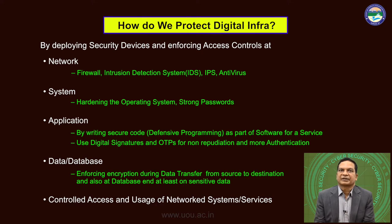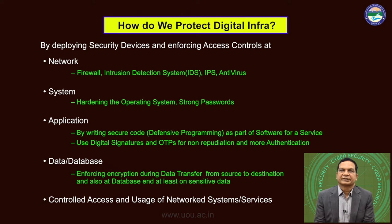At the system domain, hardening the operating system, enforcing strong passwords, and protecting ports are required. At the application level, by writing secure code — called defensive programming — as part of software or services, use digital signatures and OTPs (one-time passwords) for non-repudiation and stronger authentication. At the data and database level, enforce encryption during data transfer from source to destination and also at the database end, at least on sensitive data. In addition, control access and usage of network systems and services.